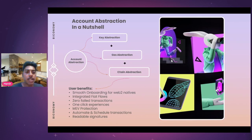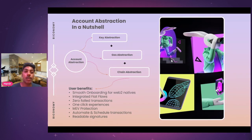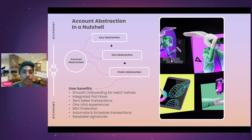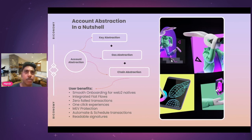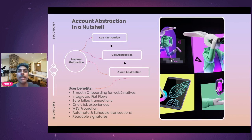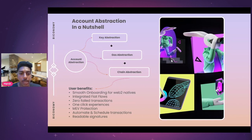These three abstractions help users benefit from smooth onboarding for Web2 natives. You are also able to integrate fiat flows. There are zero failed transactions because of abstraction, and the user gets a one-click experience. MEV protection is there for DeFi dApps, and you can even automate and schedule transactions because your account acts as a smart contract where you can inject code. Readable signatures are also an ongoing process and will mature soon — perhaps like UPI IDs or ENS names like harsh.eth.